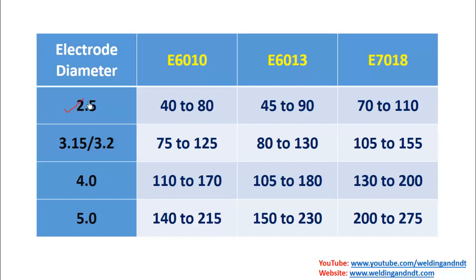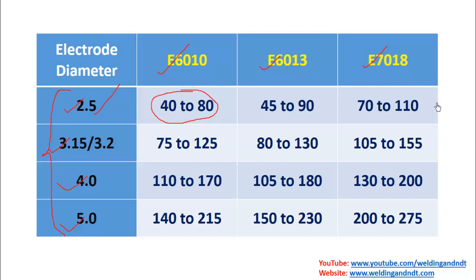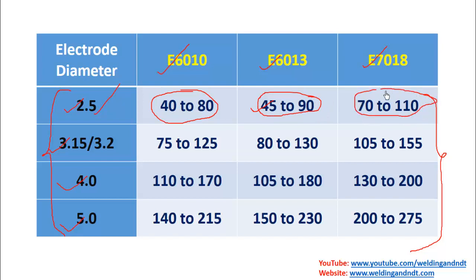For 2.5mm diameter electrode: E6010 current range is 42 to 80 amperes, E6013 current range is 45 to 90 amperes, and E7018 current range is 70 to 110 amperes. For other diameters you can go to Table A.4 to find the applicable current range for each and every diameter electrode.